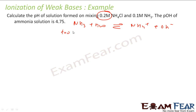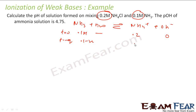At t = 0, NH₄⁺ (from NH₄Cl) is 0.2 M, NH₃ is 0.1 M, and OH⁻ is 0. At equilibrium, NH₃ becomes 0.1 − x, NH₄⁺ becomes 0.2 + x, and OH⁻ becomes x.